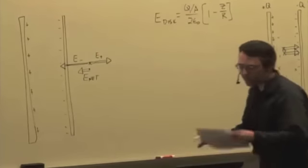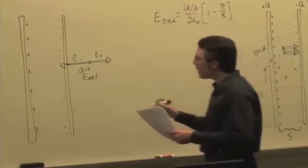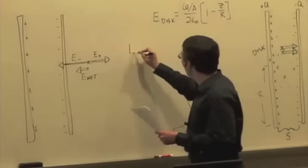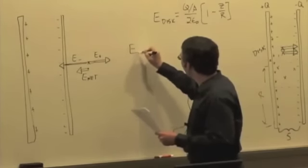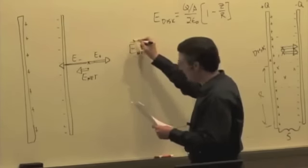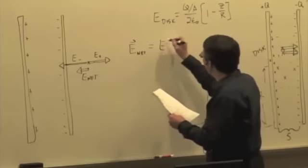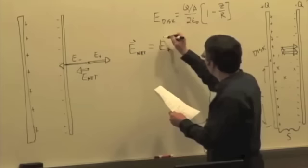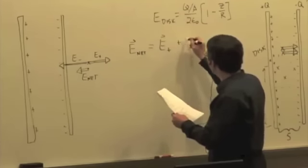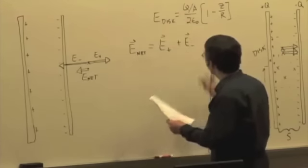And let's see if we can work out what the magnitude is. Same idea. The net electric field is going to be the electric field due to the positively charged plate plus the electric field due to the negatively charged plate.